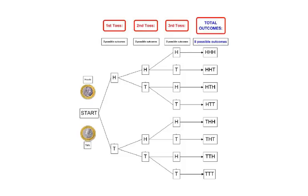On the third toss, we had two again: heads, tails, heads, tails, heads, tails, heads, tails — two branches for each of the previous outcomes.